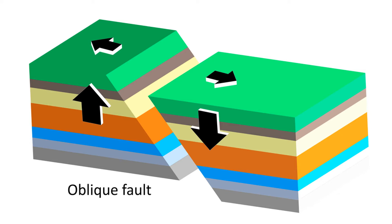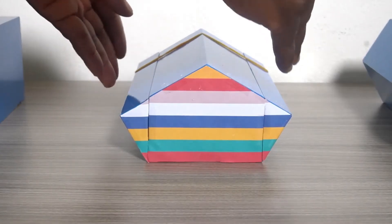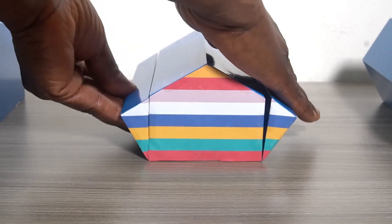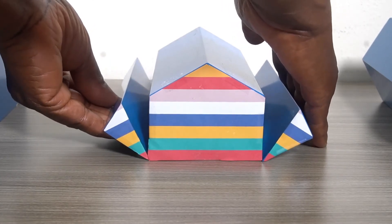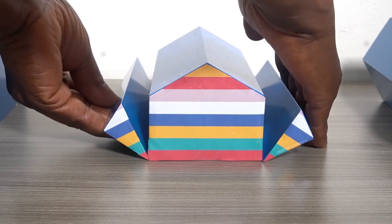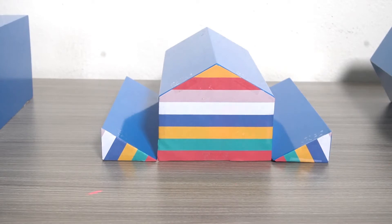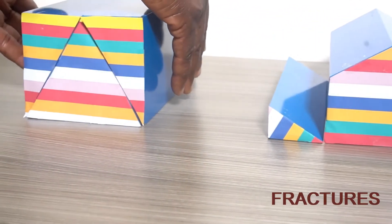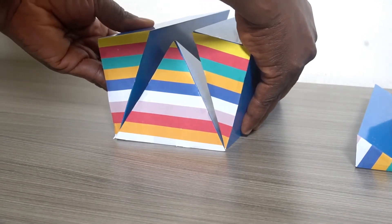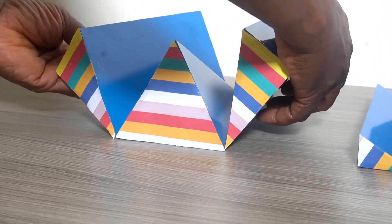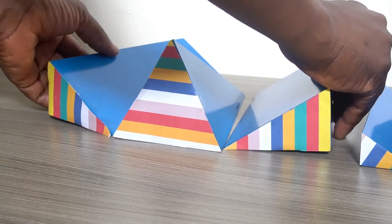As the pressure pushes farther and farther, the rocks begin to move farther and farther apart. As the pressure increases, the rocks begin to move apart until, as the pressure continues to increase, they end up falling apart like this. These falling pieces are called fractures. As the pressure increases the rocks begin to move further and further apart, and as the pressure continues to increase they end up falling apart, as you see here.